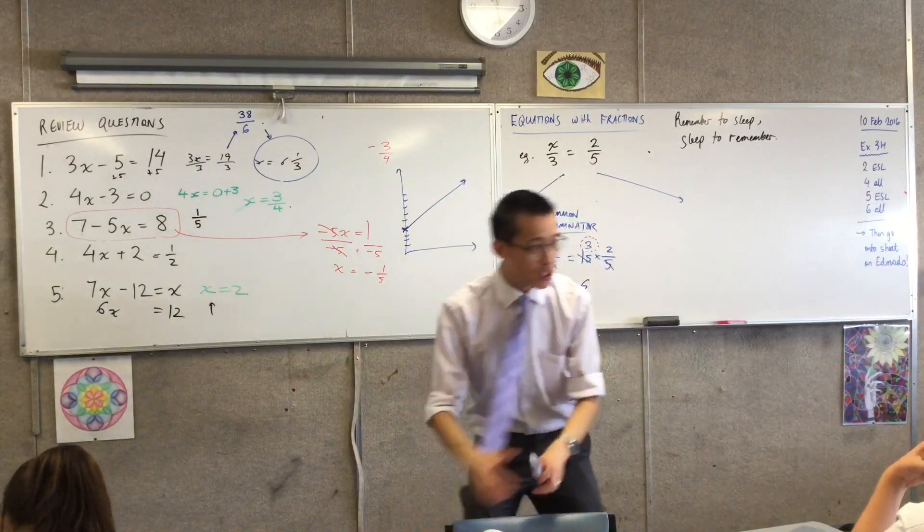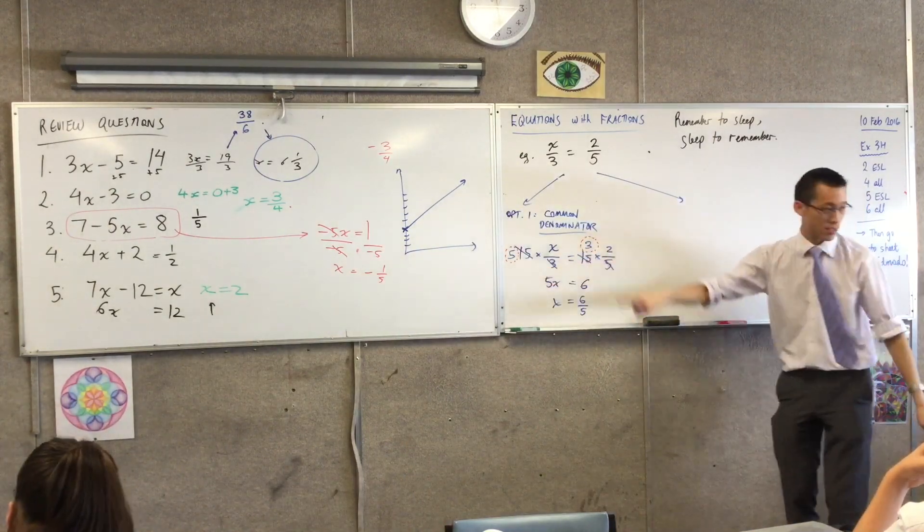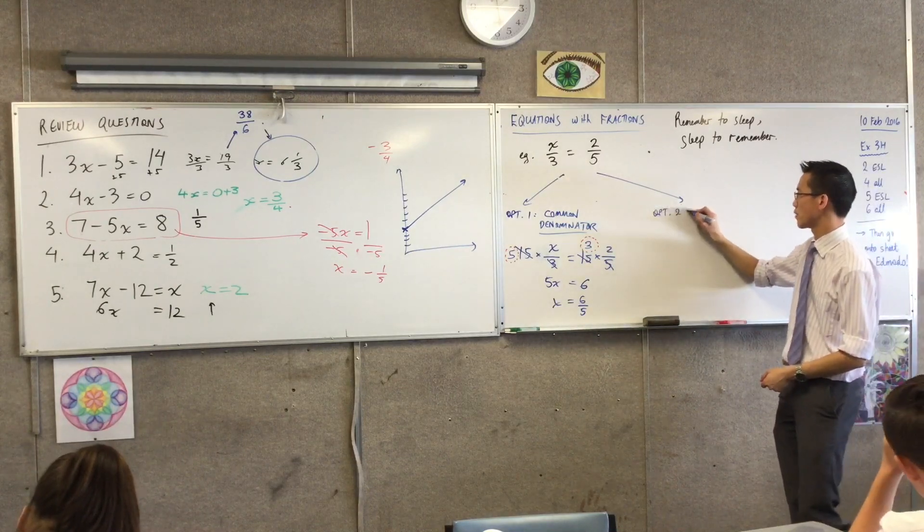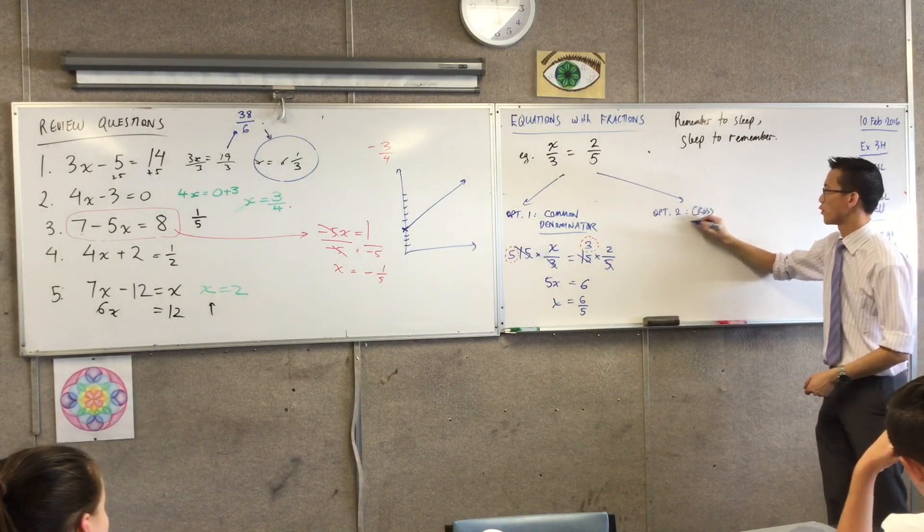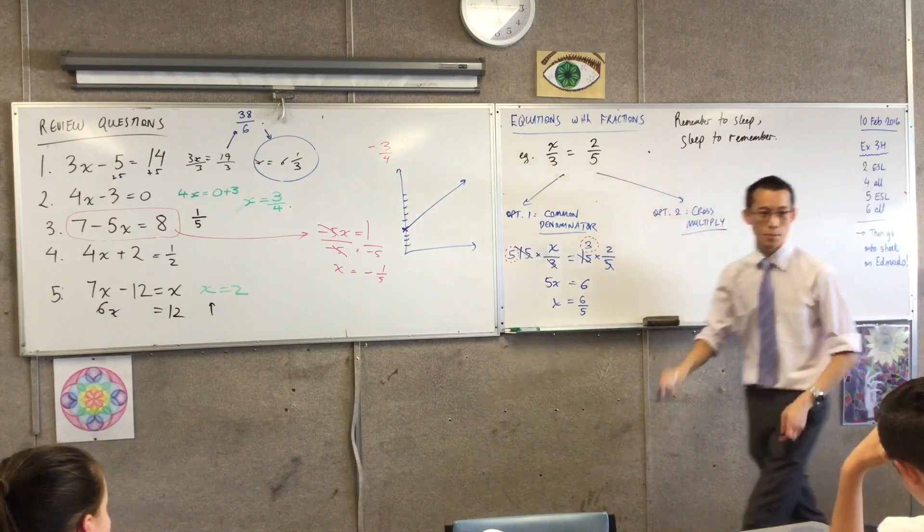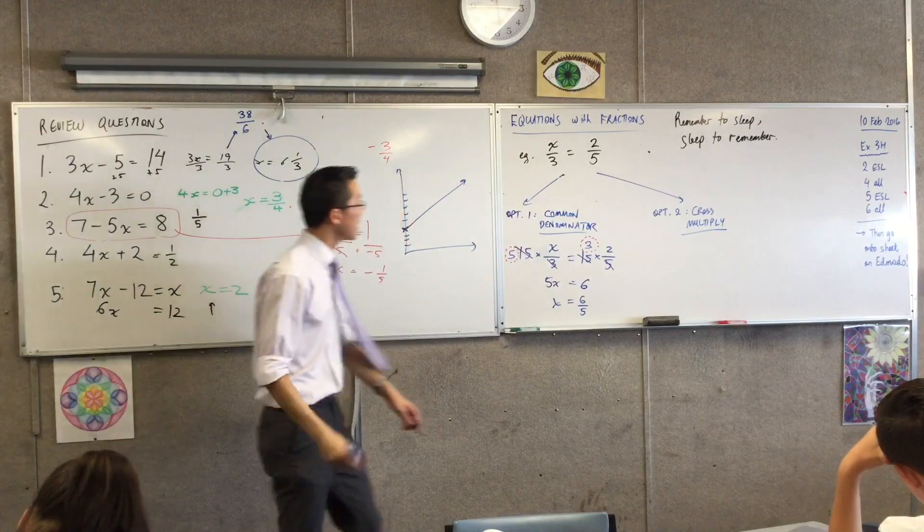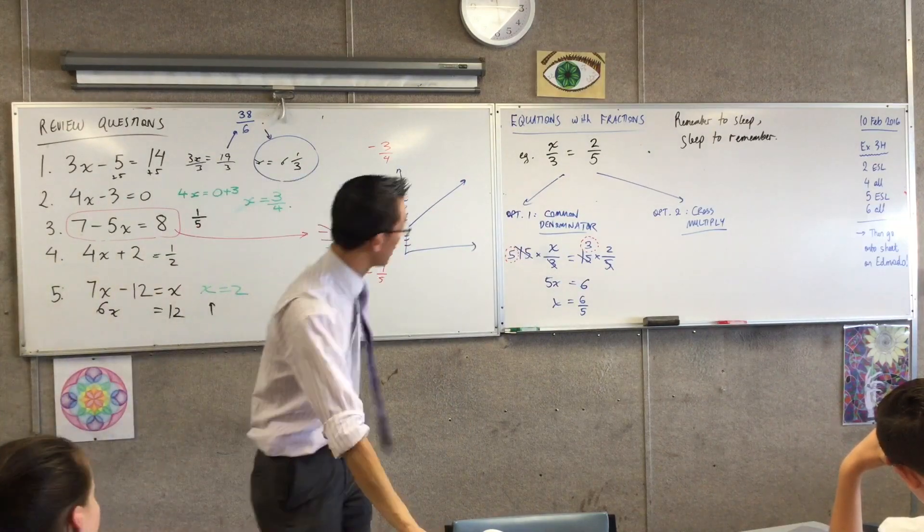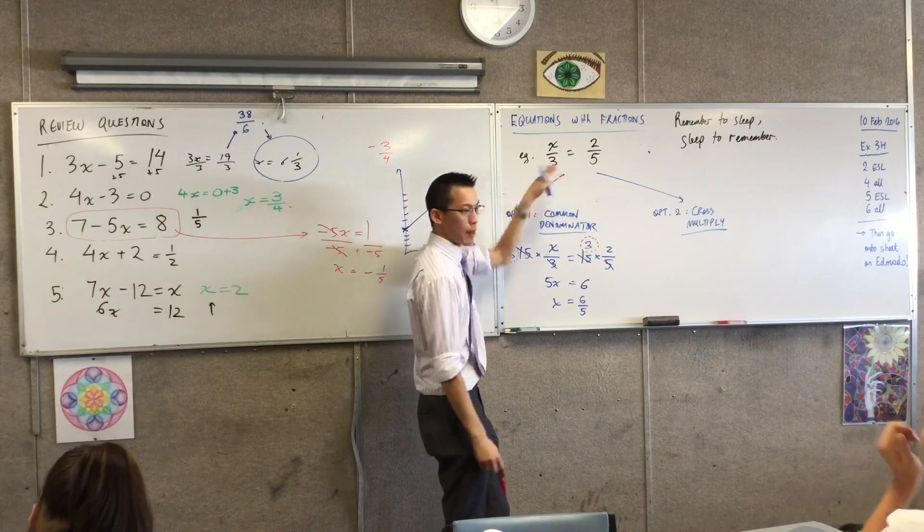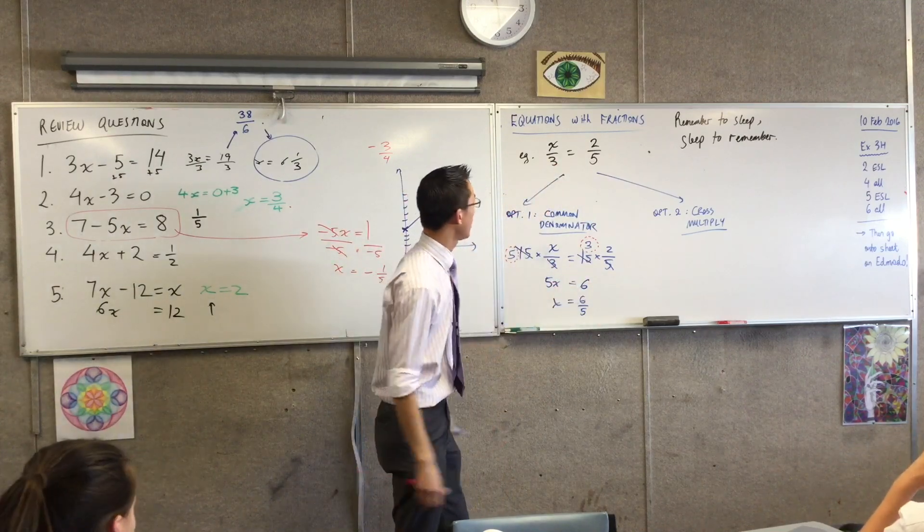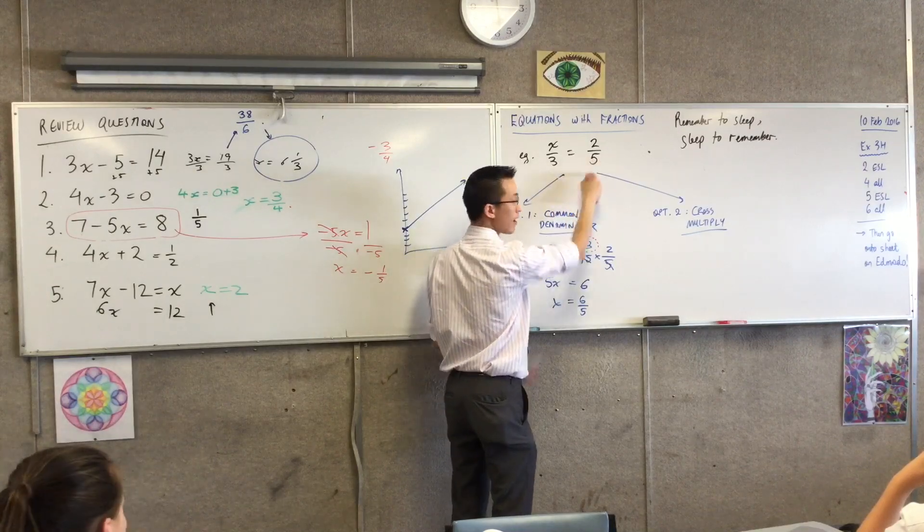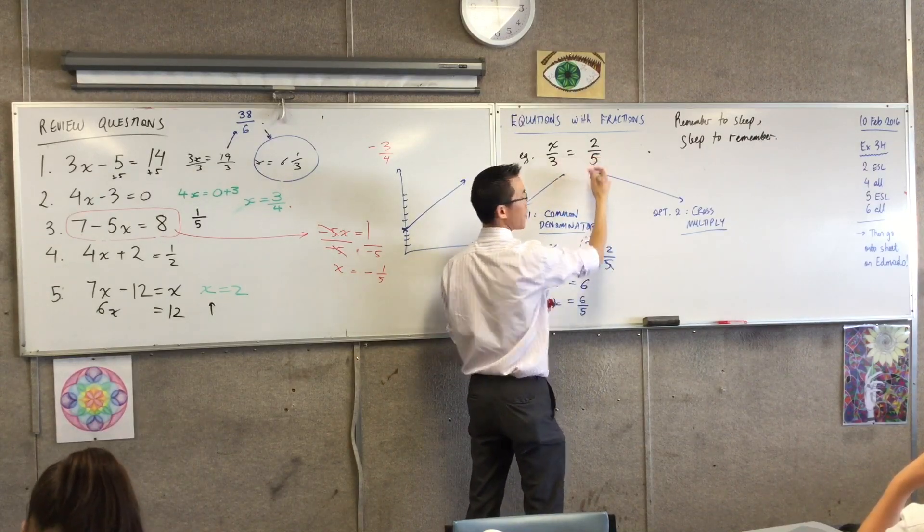Option two has a pretty fun name, and some of you have met this before I hope. It's called cross multiplying. Here's the idea. I'm going to even draw it up on the board so you can see. I multiplied by 15 to get rid of both of them. But what I can do is if I multiply both sides by 5, this 5 is going to—and this is the language we were using before...